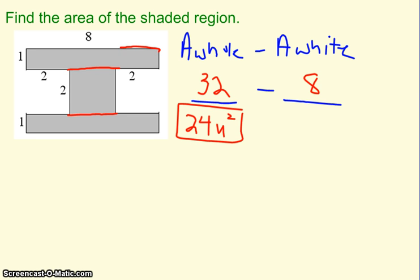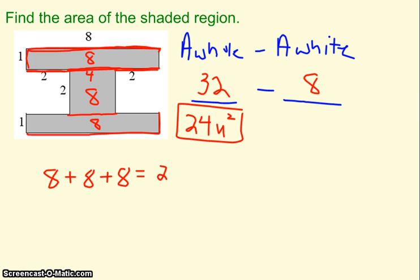Along the top, it looks like it is 8 by 1. 8 times 1 is 8. The bottom is also 8 by 1. 8 times 1 is 8. And then in the middle, if this is 2 and this is 2, that adds up to 4. That makes the missing part 4, because this bottom has to add up to 8, because it matches with my top piece. 4 times 2 is 8. So if you did 8 plus 8 plus 8, you'd also get 24 units squared.